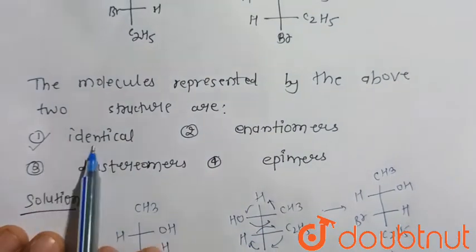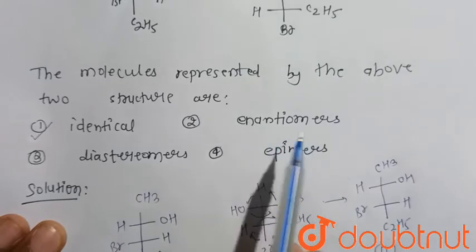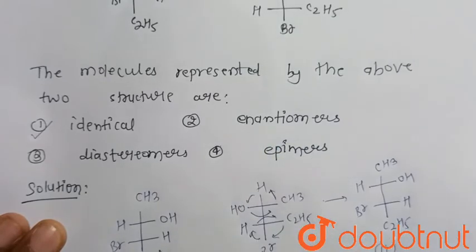Option number first would be the right choice. We know that enantiomers are two optically active compounds which are mirror images of each other. They are not mirror images of each other, so they are not enantiomers.